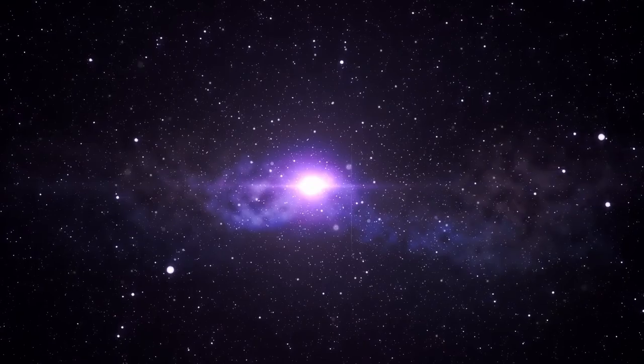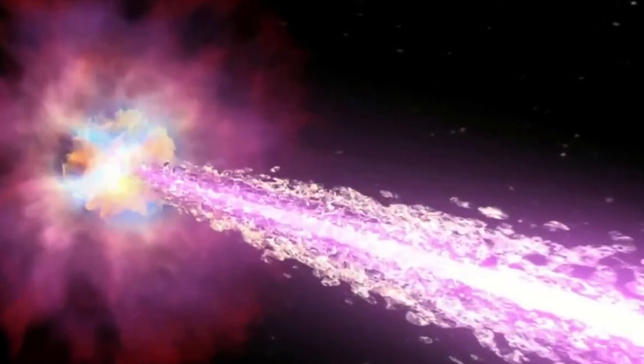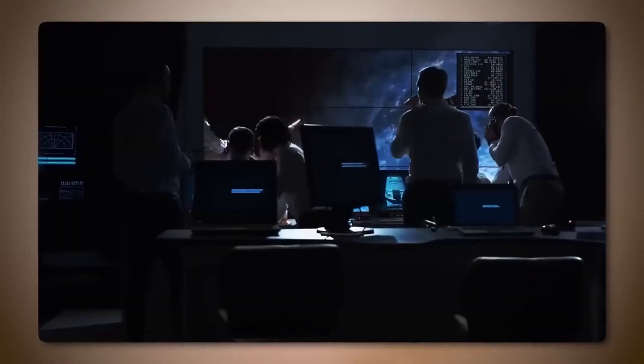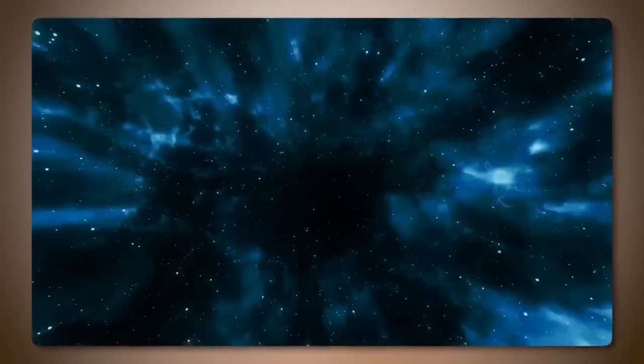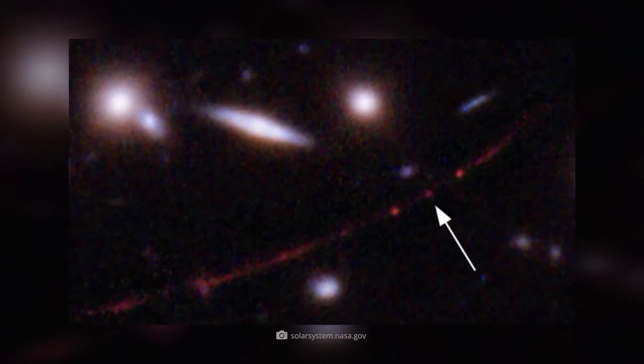The data from the Voyager spacecraft revealed many similarities, such as the overall density of particles encountered in interstellar space. However, their journeys revealed notable differences, sparking new questions about the Sun's trajectory through the galaxy.